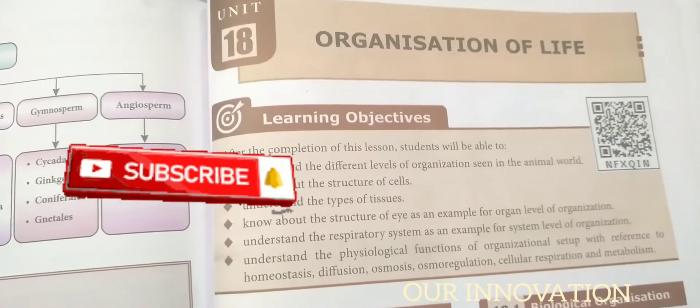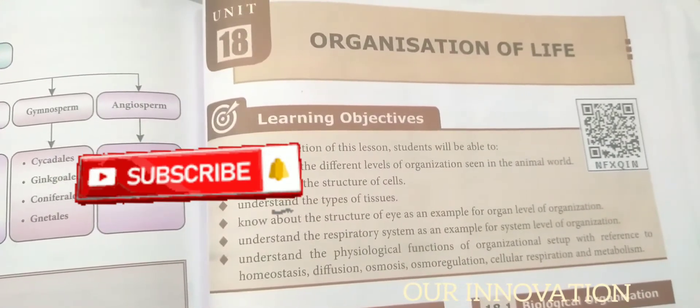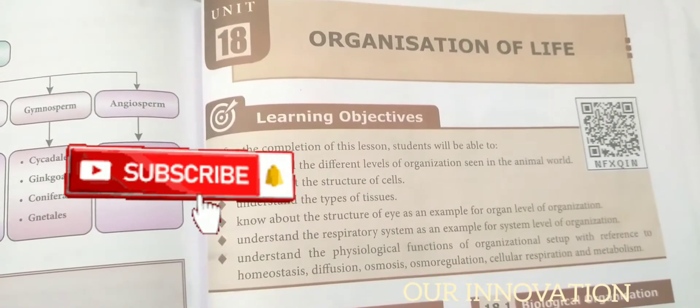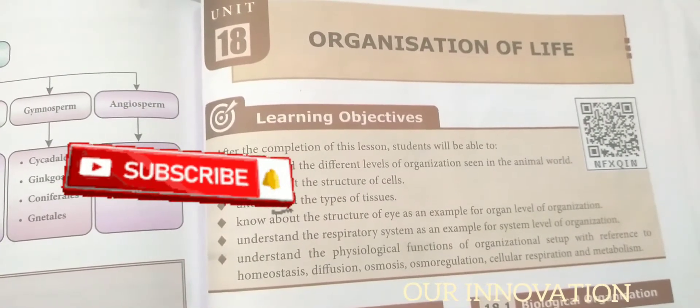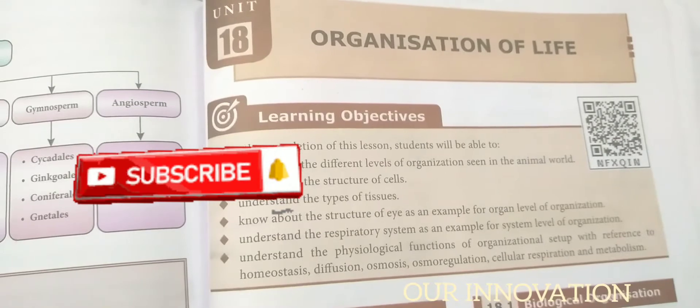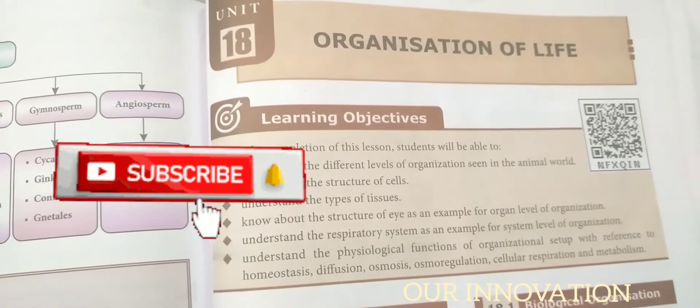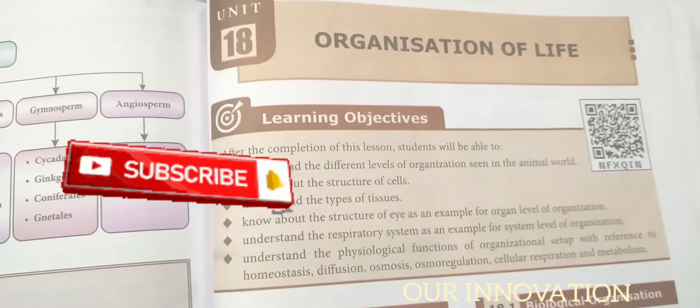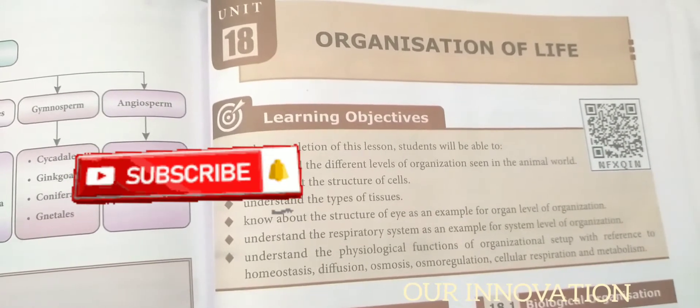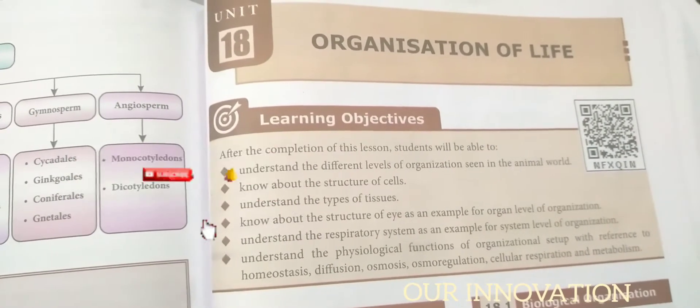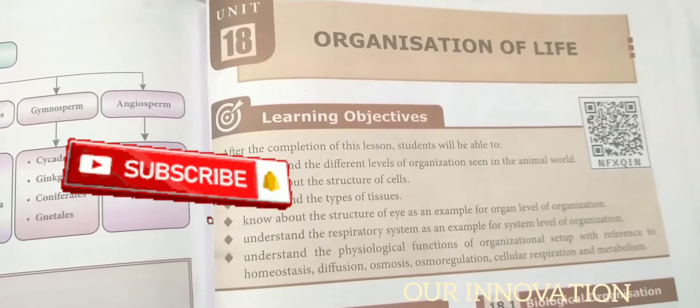Hi, warm greetings to all. Today we are going to learn 8 signs unit 16, Organization of Life, book evaluation. Roman numeral 1 to Roman numeral 4, we are going to see in this video.